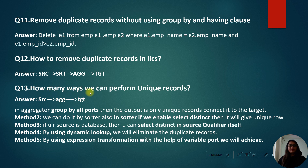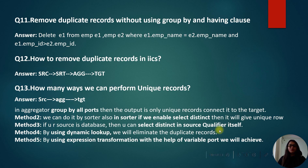How many ways can we get unique records? There are several methods. Method 1: In the Aggregator transformation, group by all columns — the output will be only unique records. Method 2: In the Sorter transformation, enable the distinct option. Method 3: If the source is a database, select distinct records in the Source Qualifier transformation. Method 4: Use the dynamic lookup cache to eliminate duplicates. Method 5: Use the Expression transformation with a variable port to achieve this.